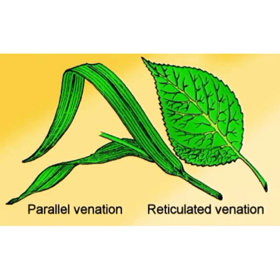As you can see in the diagram, the first type is parallel venation and the second is reticulate venation. In parallel venation, the veins run parallel to each other. Examples include banana, grass, and wheat.